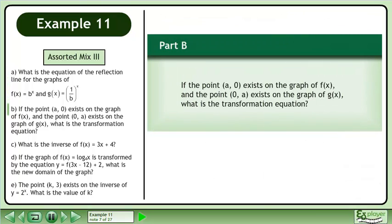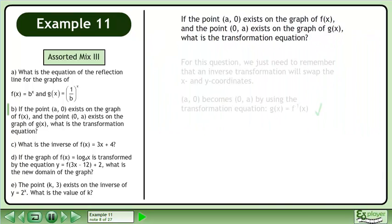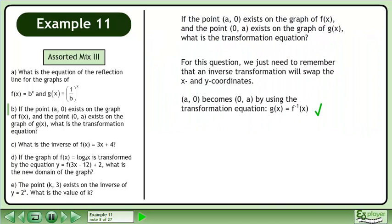In part b, if the point (0, a) exists on the graph of f, and the point (a, 0) exists on the graph of g, what is the transformation equation? For this question, we just need to remember that an inverse transformation will swap the x and y coordinates. a becomes 0a by using the transformation equation g equals the inverse function of x.